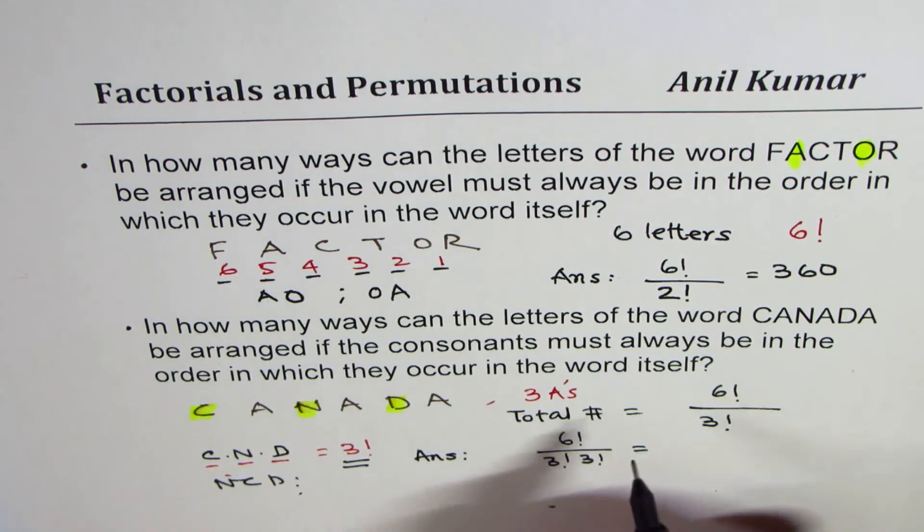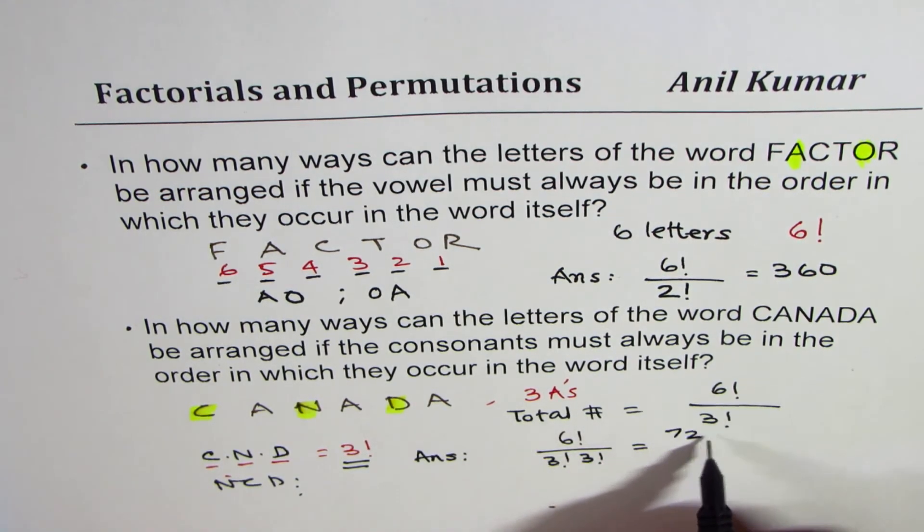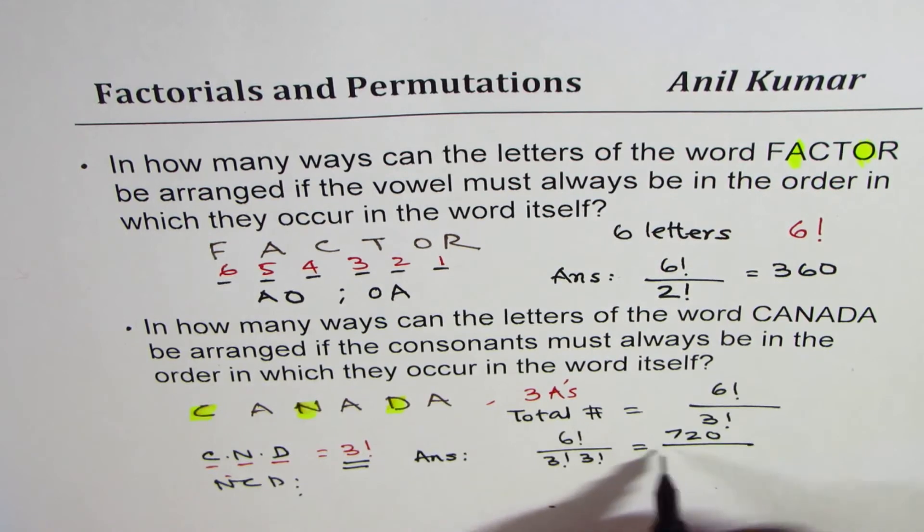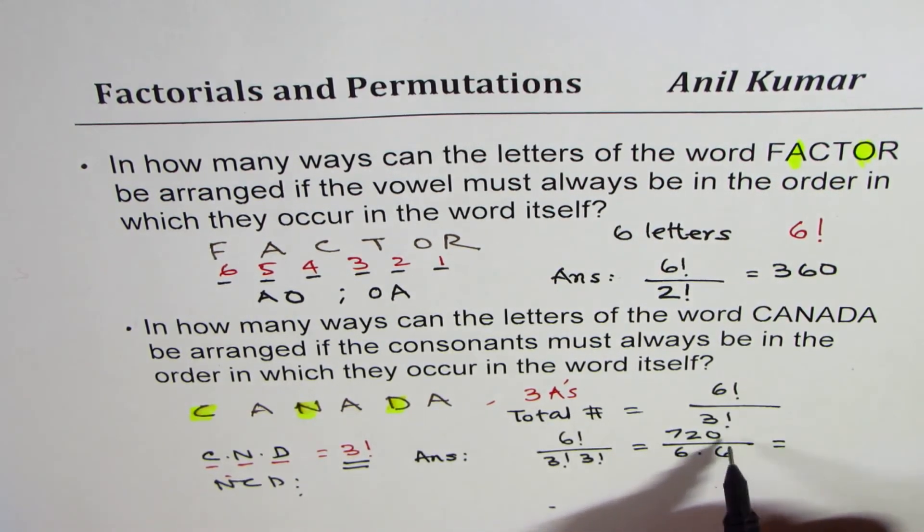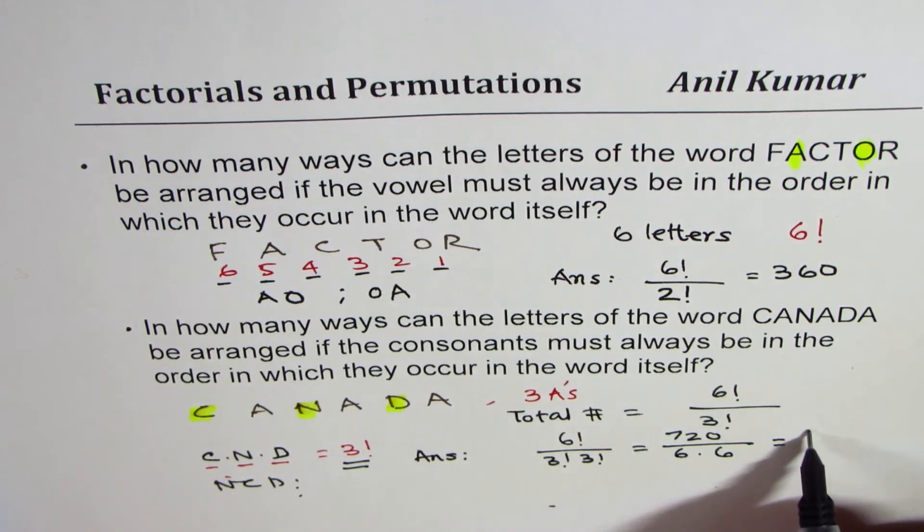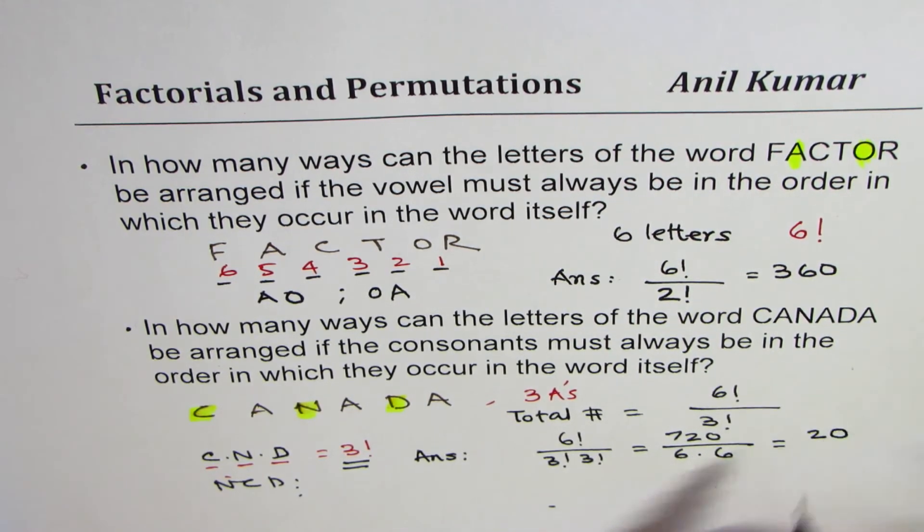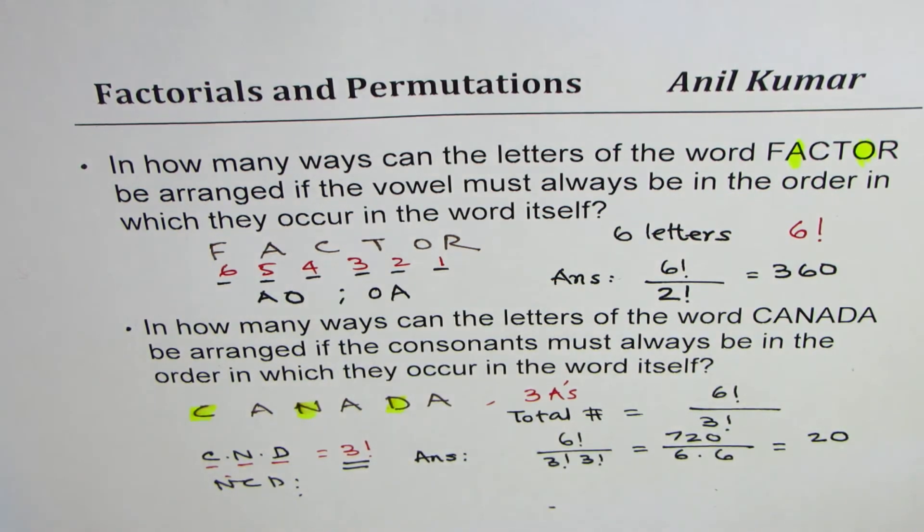So this time, the answer will be 6 factorial divided by 6 times 6. So when you do that, what do you get? 36, when you divide this into 720, you get 20 as your answer.